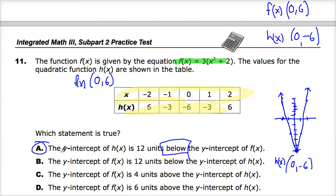Looking at the other ones, B: the y-intercept of f(x) is 12 units below. f(x) is not below, it's above, so that one's out. And then they give you different units. f(x) is 4 units above. It's not 4 units above, it's 12. And 6.